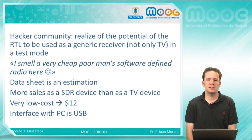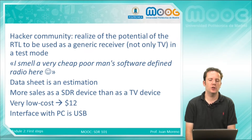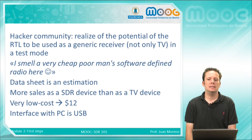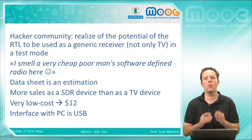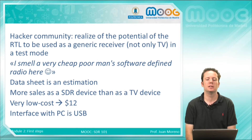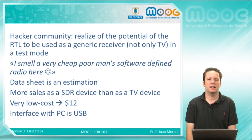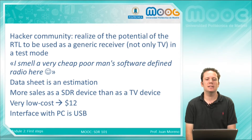The history of this device comes from some hackers who realized that this television receiver was not only a television receiver — it could also be a generic receiver. The key idea was to switch from the TV mode to a test mode, a generic mode, where the receiver was able to work on a wider range of frequencies. Very famous is the phrase of one of the hackers — in an ethical sense — who said: "I smell a very cheap, poor man's software defined radio here."